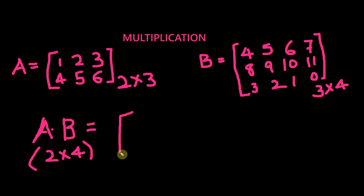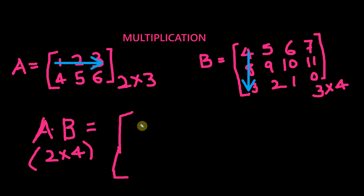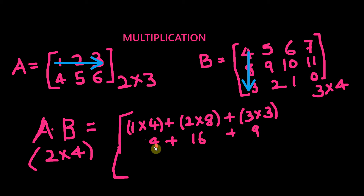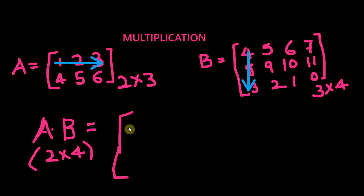What are we going to get if we multiply A with B? The result is going to be a 2 by 4 matrix. First, let's multiply the first row in matrix A with the first column in matrix B: 1, 2, 3 with 4, 8, 3. So 1×4 plus 2×8 plus 3×3 gives us 4 plus 16 plus 9. The total is 29. So the first row, first column value is 29.